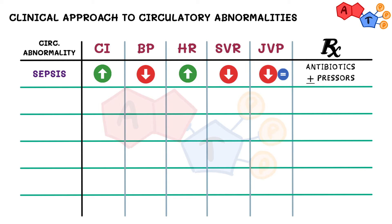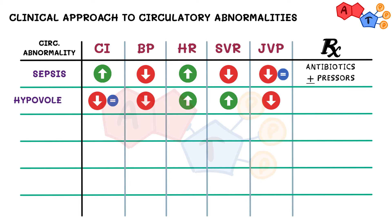The second condition shows low cardiac index with low preload or JVP. The problem here is related to preload. These cases can represent conditions such as hypovolemia, and the treatment would be volume repletion.